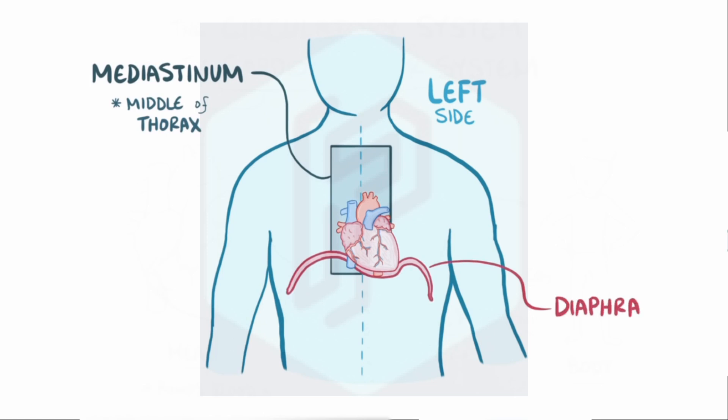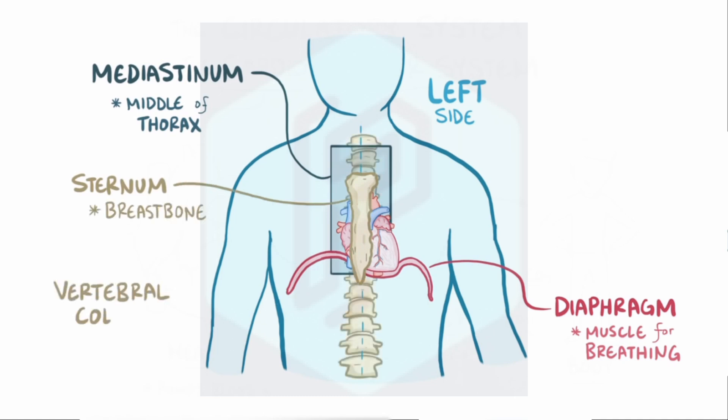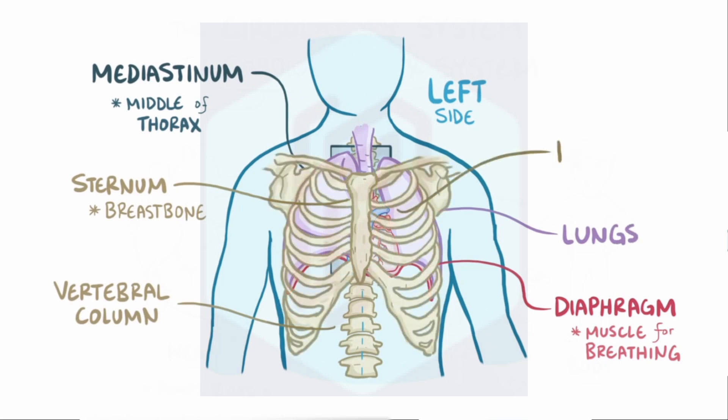It sits on top of the diaphragm, which is the main muscle that helps with breathing, behind the sternum or breastbone, in front of the vertebral column, squished in between two lungs, and is protected by the ribs.